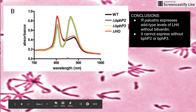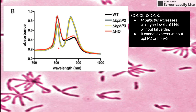You can see in this graph that light harvesting complex 4 absorbs light at 800 nanometers and 860 nanometers wavelength. This graph is showing how much of the LH4 is working inside the cell. You can see in the wild type and in the HO mutant how much it absorbs, but in these other mutants where we take away phytochrome, they're not really making any of the LH4. The absorption spectra is just the opposite of what it should be if we did have LH4.